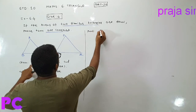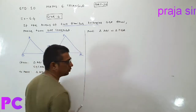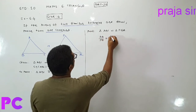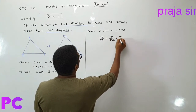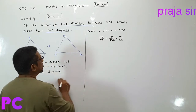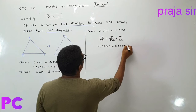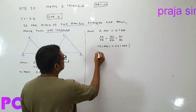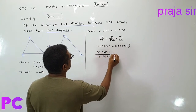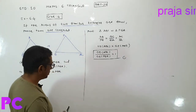In the proof, triangle ABC is similar to triangle PQR. Now we know that AB upon PQ is equal to BC upon QR is equal to AC upon PR as per the similarity. Now area of triangle ABC is equal to area of triangle PQR — both are equal. If I take their ratio, the answer will be 1. This is our result number 1.